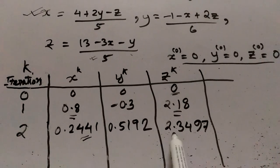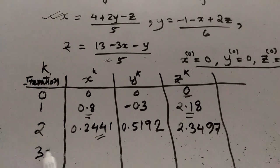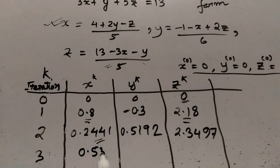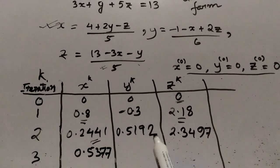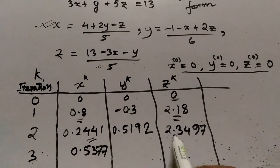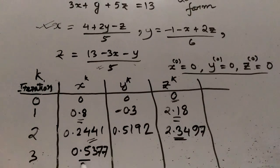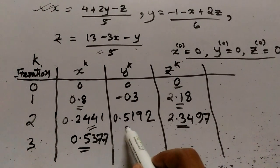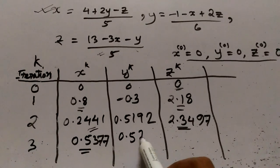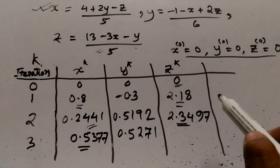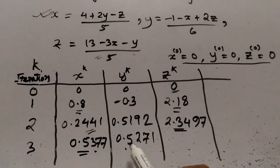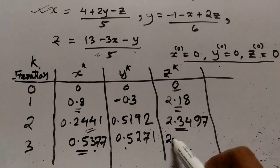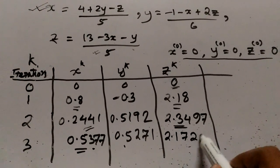In the third iteration, I take the previous y and z values to calculate x = 0.5377. Then using the previous z and current x, I calculate y = 0.5271. Using the current x and y values, z = 2.1720.